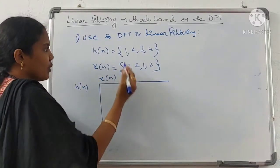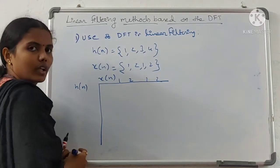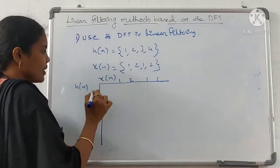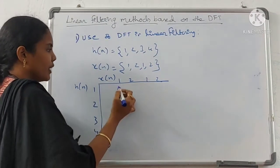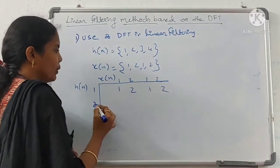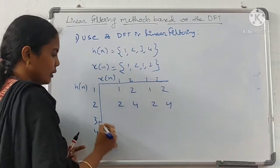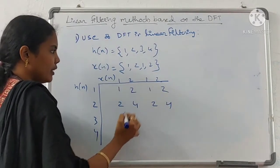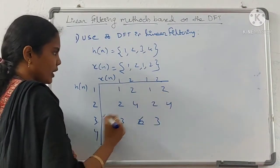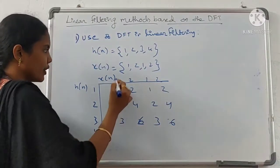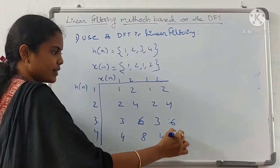x(n) given data is {1, 2, 1, 2} and H(n) given data is {1, 2, 3, 4}. Multiplying: 1 into {1,2,1,2} gives {1,2,1,2}; 2 into {1,2,1,2} gives {2,4,2,4}; 3 into {1,2,1,2} gives {3,6,3,6}; and 4 into {1,2,1,2} gives {4,8,4,8}.